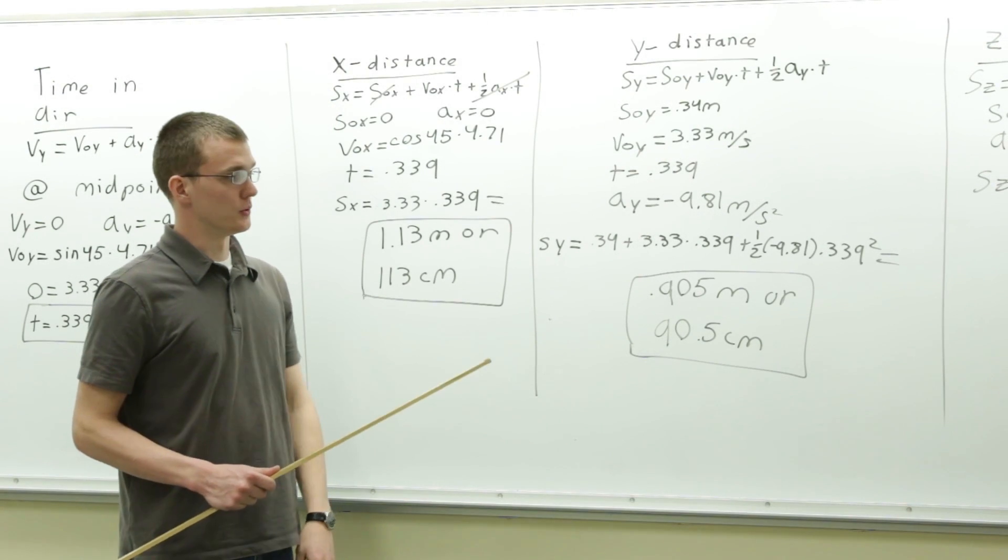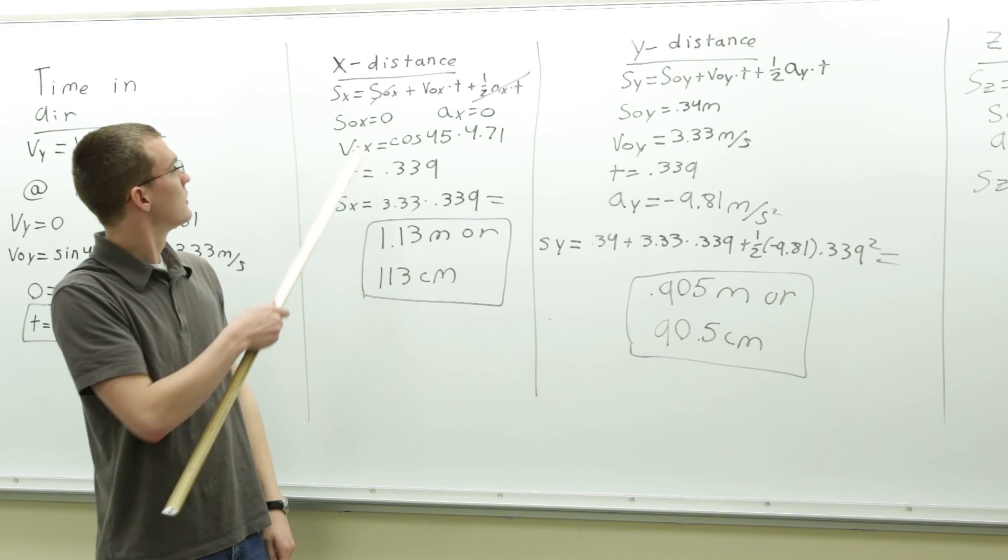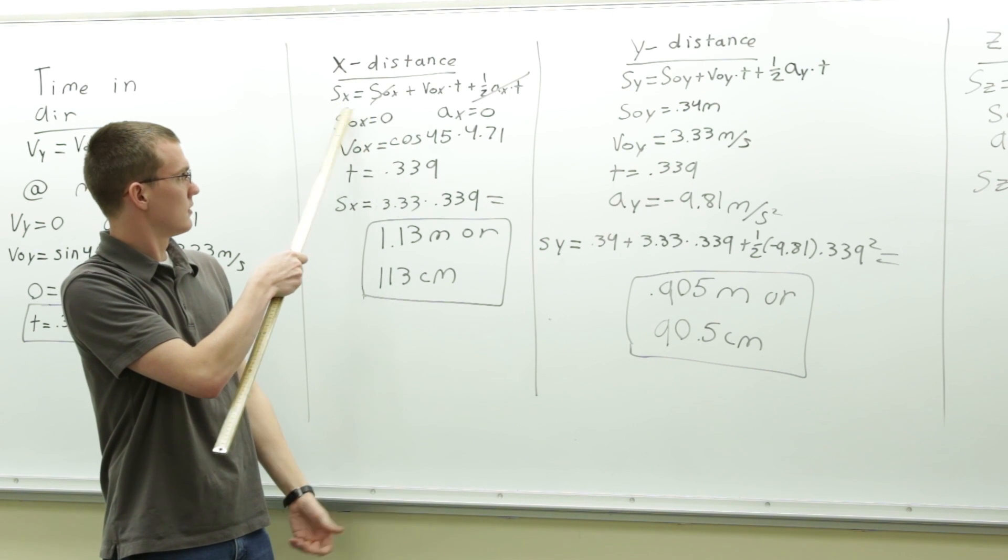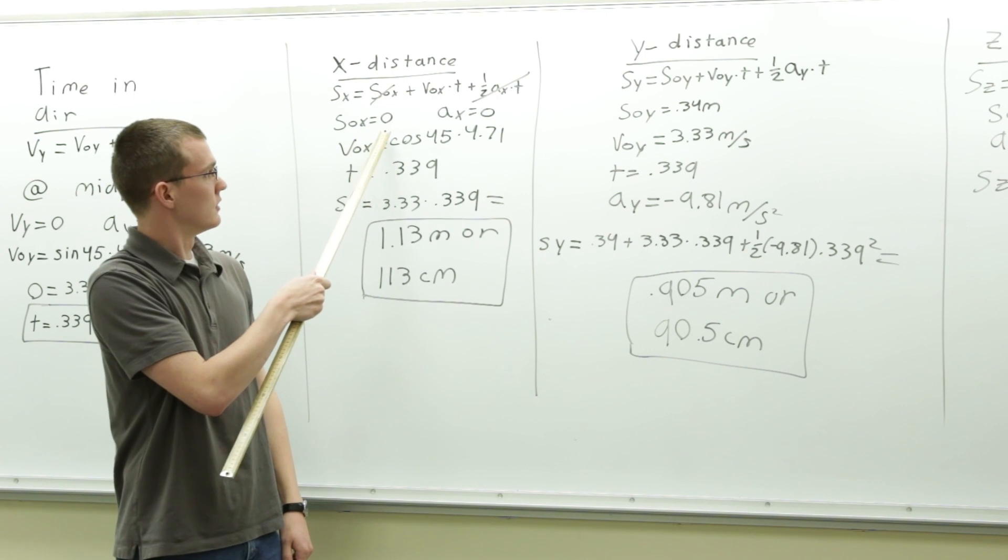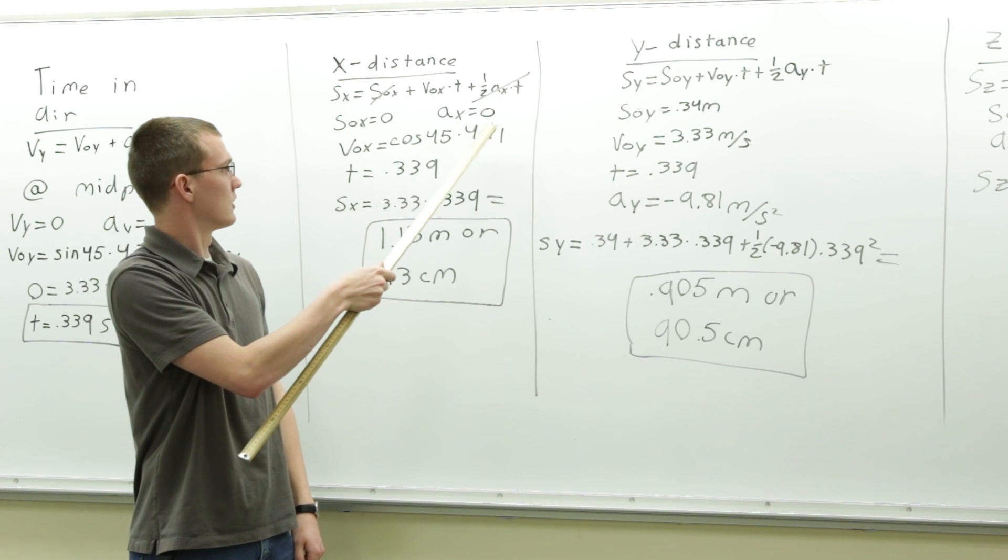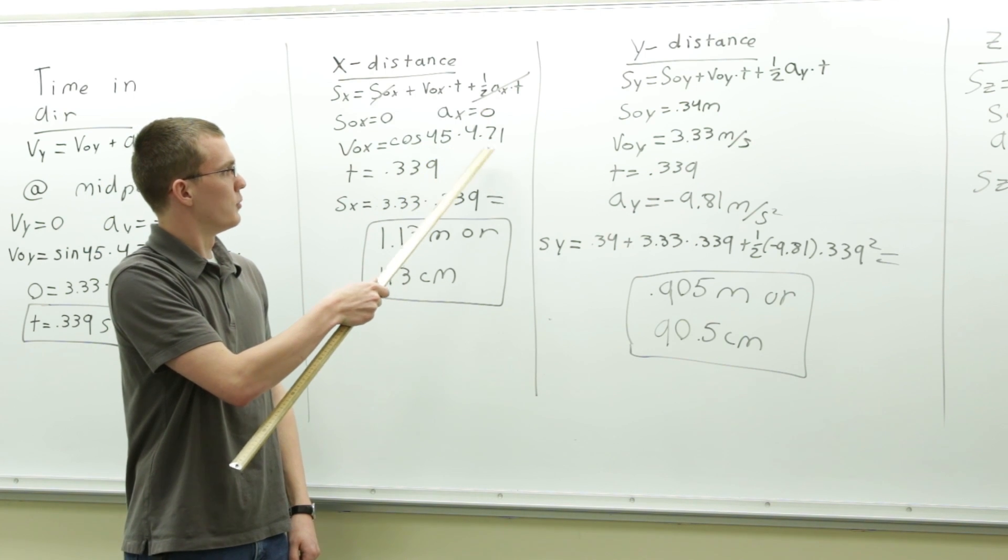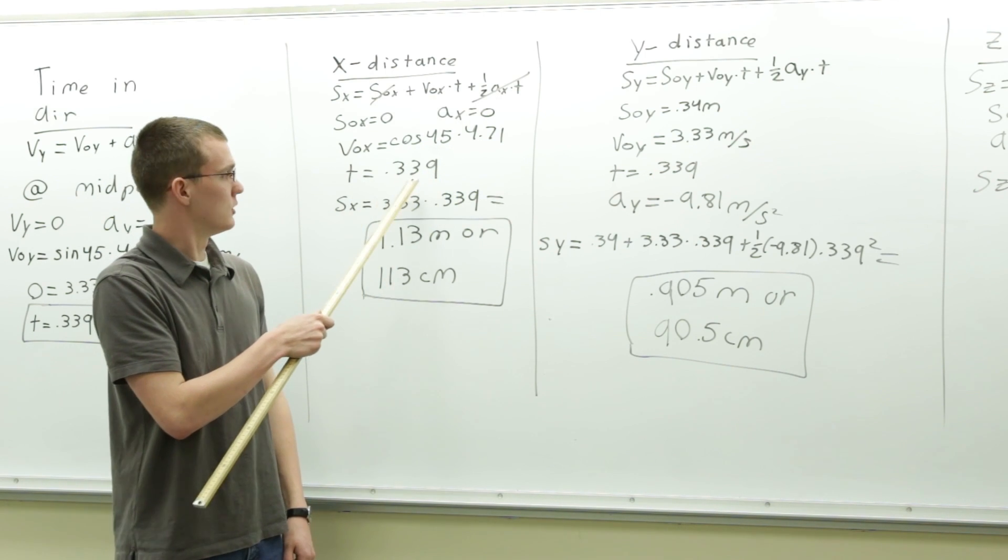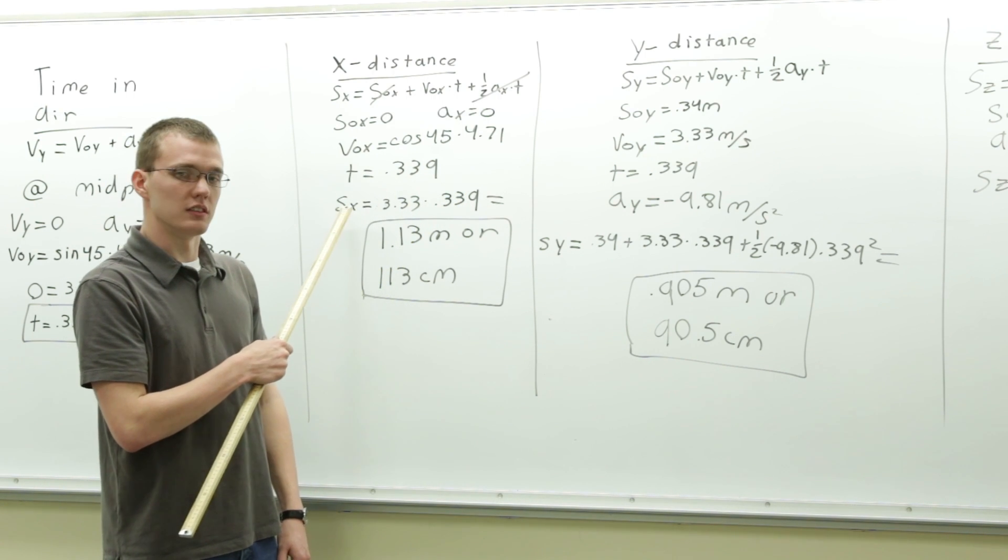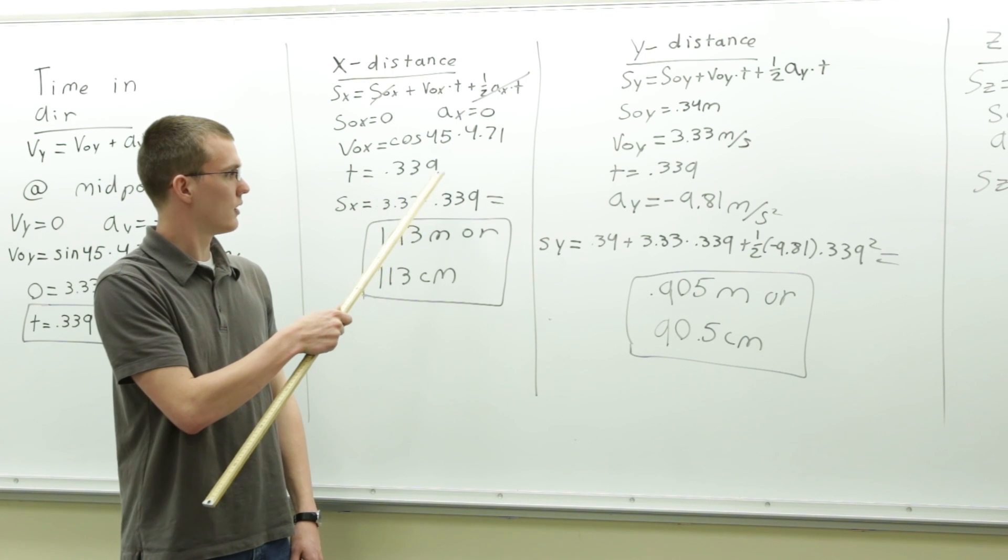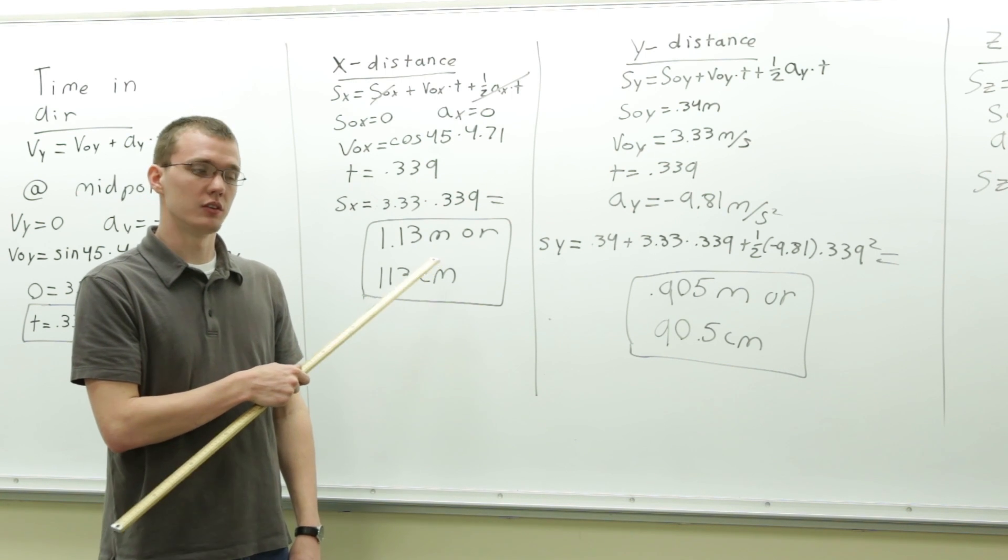Now I'm going to walk you through the equations and how we found our predicted distances. First, the x distance. Here's the equation for x, given back on equations of constant acceleration. The initial position of x is 0, and the acceleration in the x direction is 0. The initial velocity of the x is given by the cosine of the angle times the initial velocity. The time in the air is equal to 0.339 seconds. So simply, the position of the x is equal to 3.33 times 0.339, which is equal to 1.13 meters or 113 centimeters.